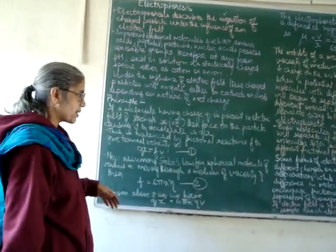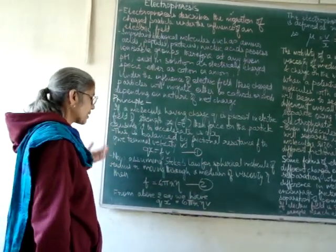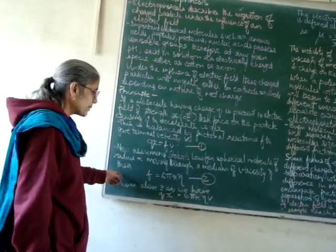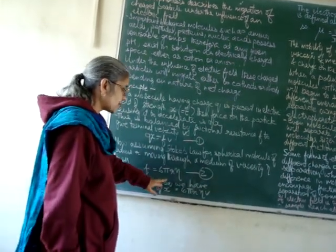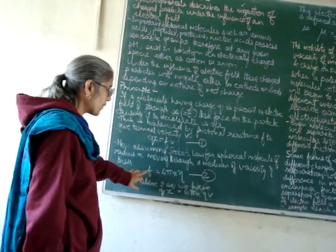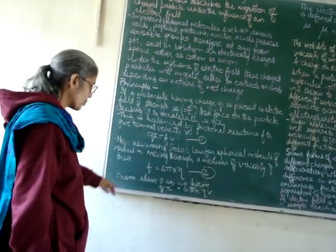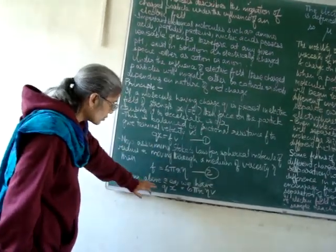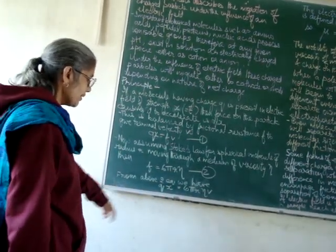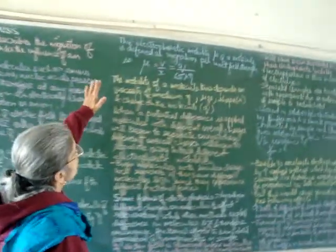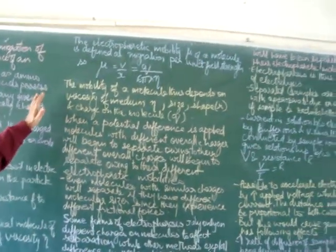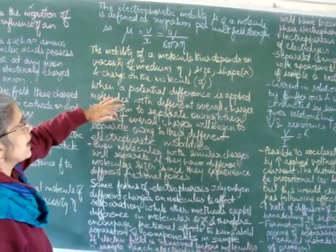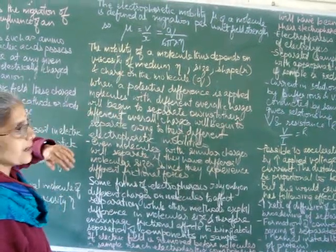Assuming Stoke's law for a spherical molecule, if the particle is spherical with radius R and is moving through a medium of viscosity Eta, then frictional resistance F = 6πRη. Substituting into QX = FV gives QX = 6πRηV. The electrophoretic mobility μ of a molecule is defined as migration per unit field strength: μ = V/X = Q/(6πRη).